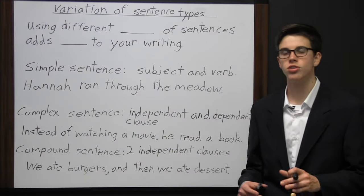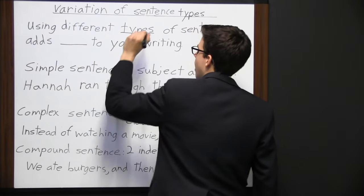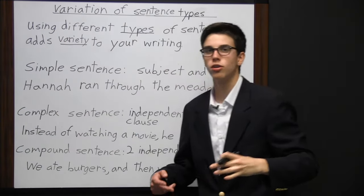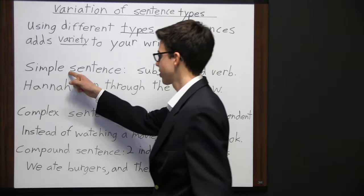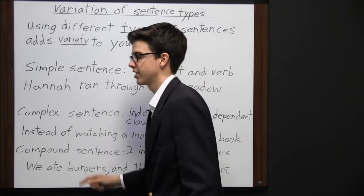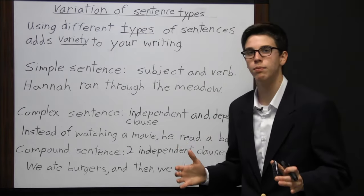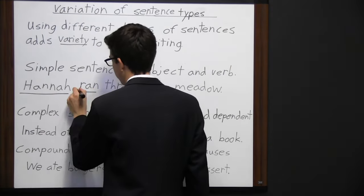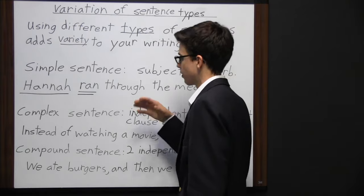It is important to use different types of sentences, because using different types of sentences adds variety and makes your writing more interesting and appealing to the reader. There are three types of sentences: simple, complex, and compound. A simple sentence is just a subject and a verb — one independent clause. For example: 'Hannah ran through the meadow.' Hannah is the subject, ran is the verb. It's a complete thought, but nothing more.